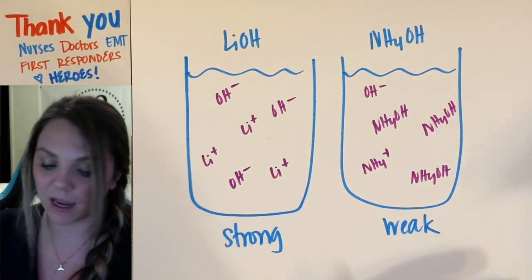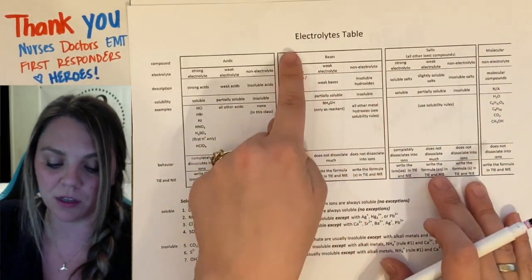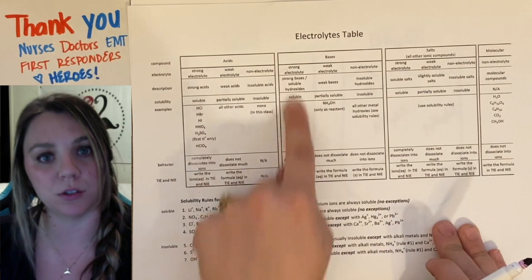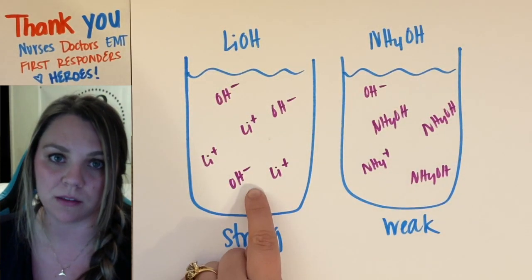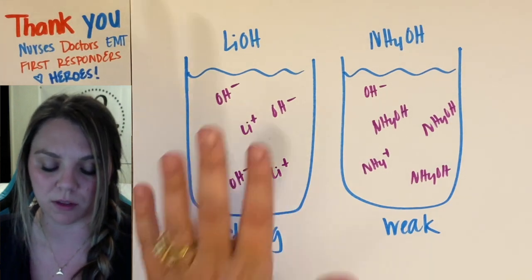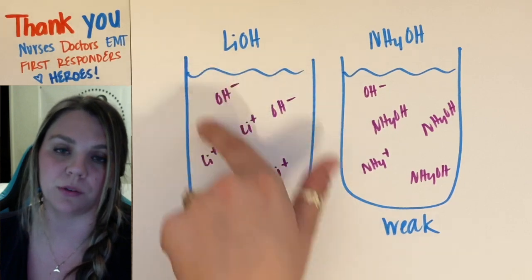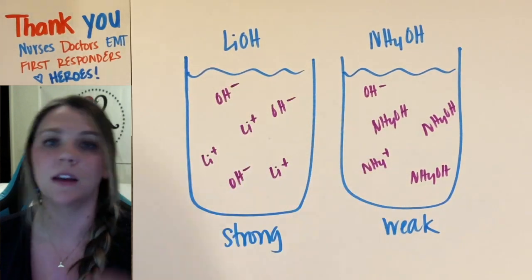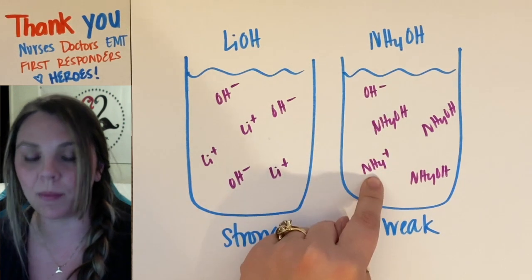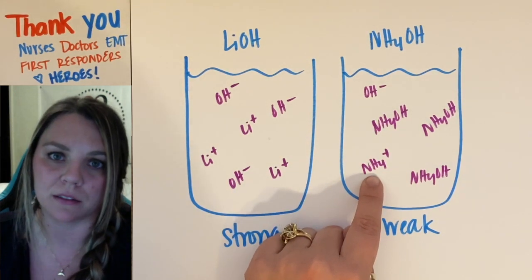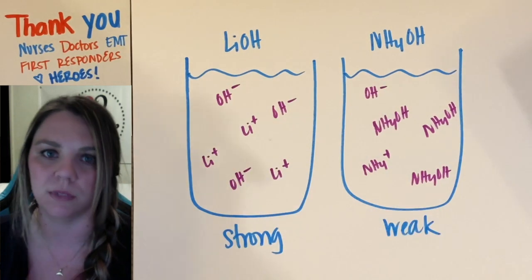This is why, as an electrolyte, your strong bases are listed as strong electrolytes. There are a lot of ions in a strong base solution, so there's a lot of ability for electricity to flow through. In your weak base, yes, there are some ions — but not a lot — so it's going to be a weak electrolyte.